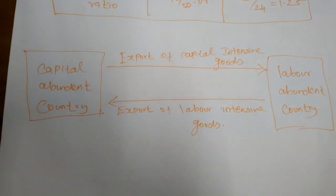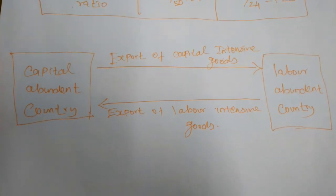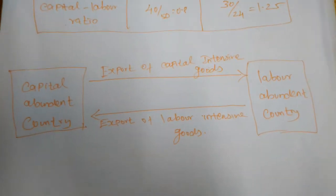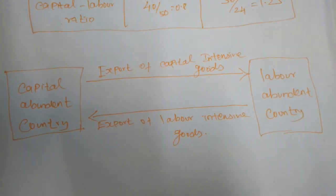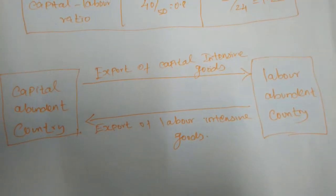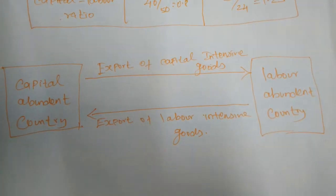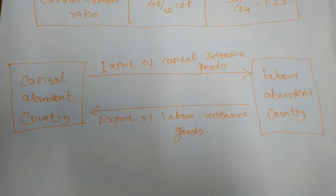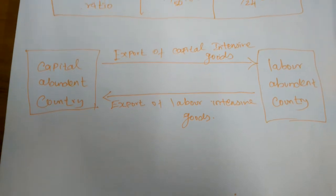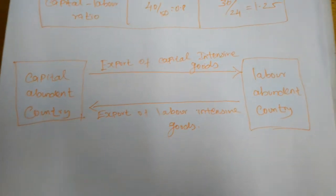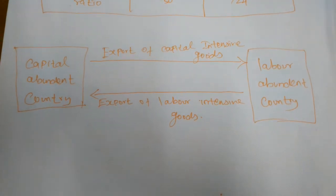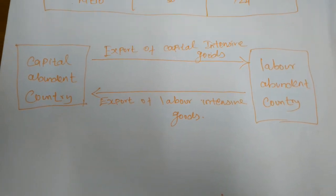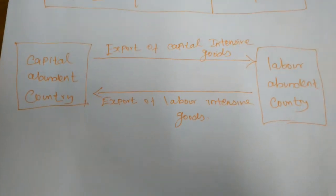In the Heckscher-Ohlin theorem, there are two limitations. First, the factor endowment of a country may change over time. Second, the efficiency of the same factor may differ between two countries. For example, considering labor — the efficiency or productivity of labor may differ between the two countries. Farmers in one country may have more productivity while labor in America may have less productivity.